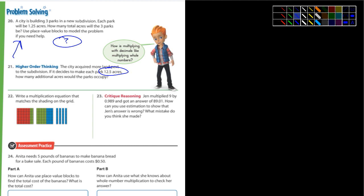Number 22: write a multiplication equation that matches the shading on the grid. The shading in red looks like 0.8 — that's 80 blocks. The green also looks like 0.8. And the blue also looks like 0.8. So I would say: 0.8 times 3 equals... and that's the equation — you have to solve it.